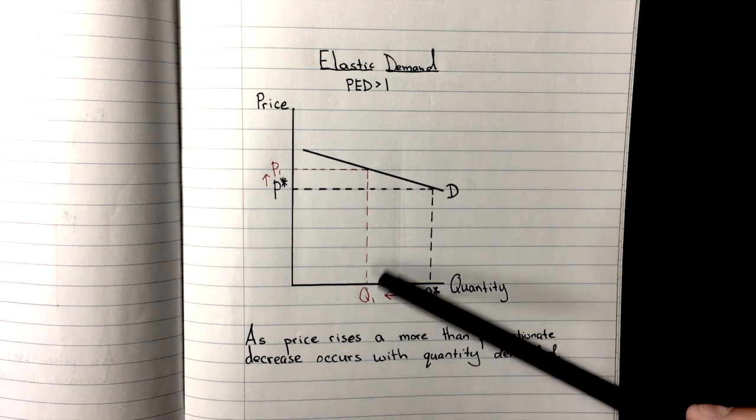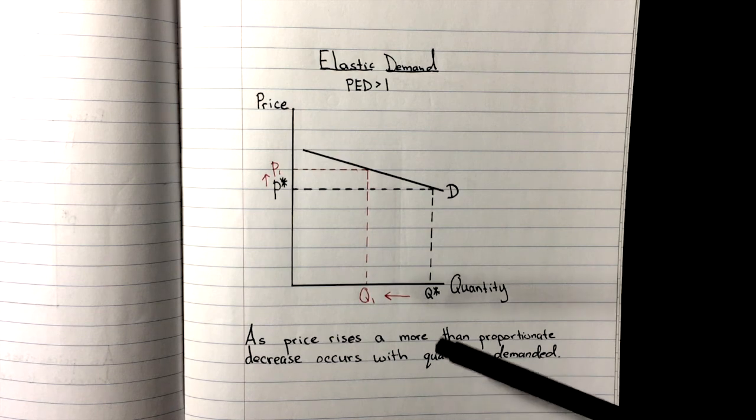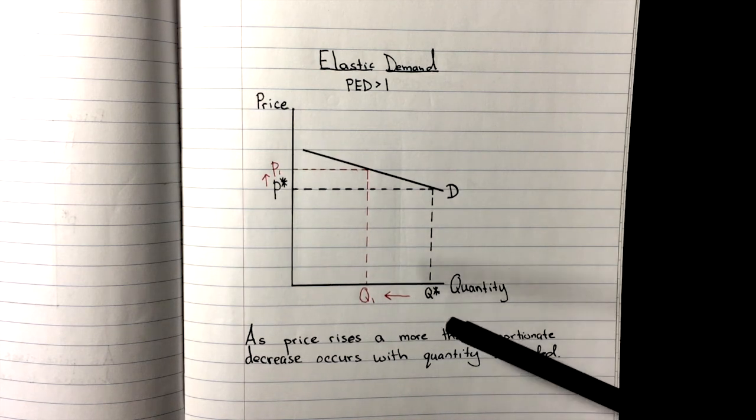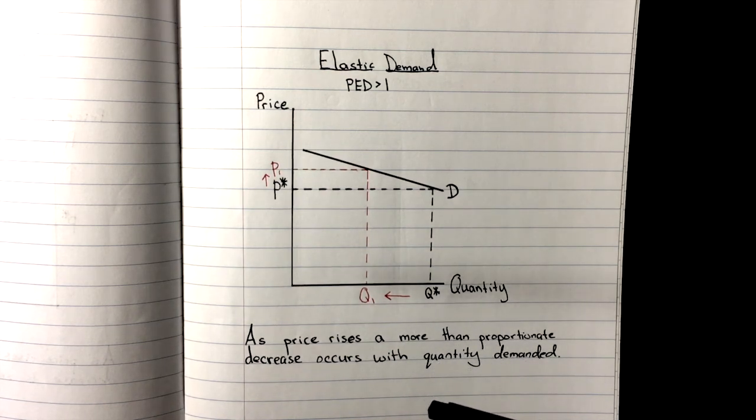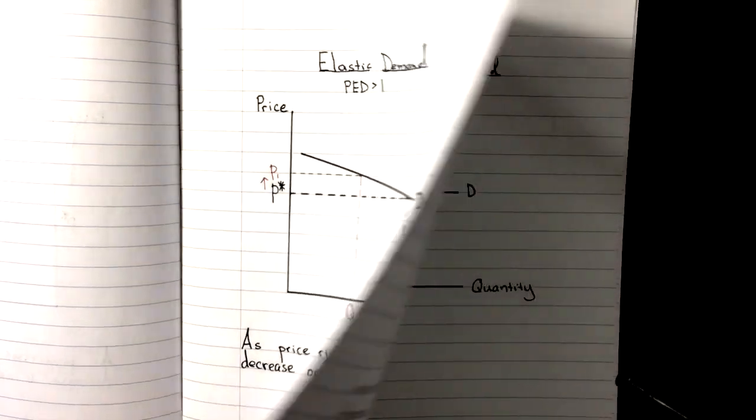So this is the case either with a price increase or price reduction for elastic demand. The change in quantity demanded is always going to be greater than the change in price, and therefore the value of PED is always going to be greater than one.